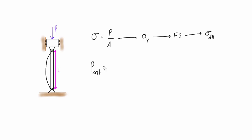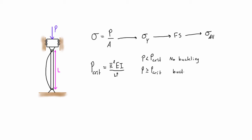P critical is equal to pi squared times EI over L squared. The material properties depend on the actual column: E is a material property, moment of inertia depends on the cross section of the column, and L depends on the actual column we're looking at. So if P is less than P critical, no buckling will occur. And if P is greater than or equal to P critical, buckling will occur.